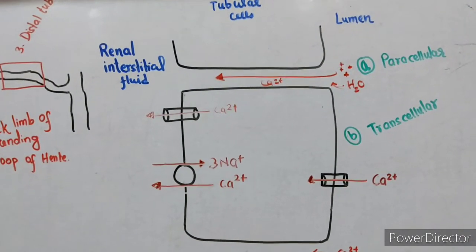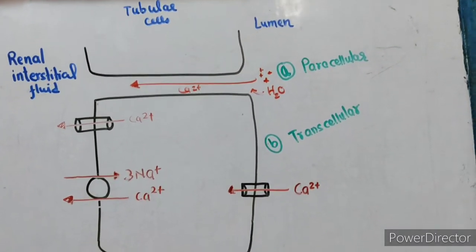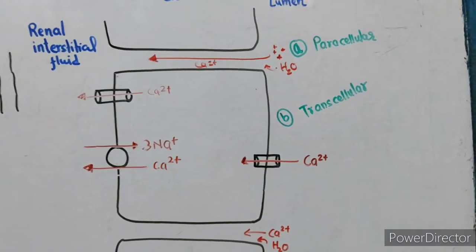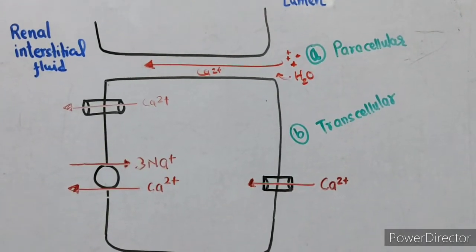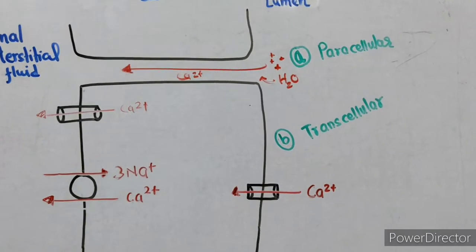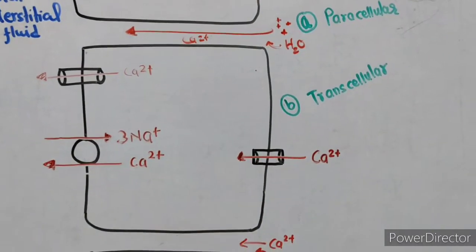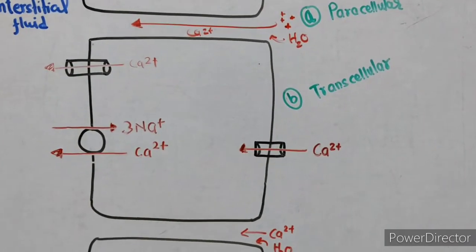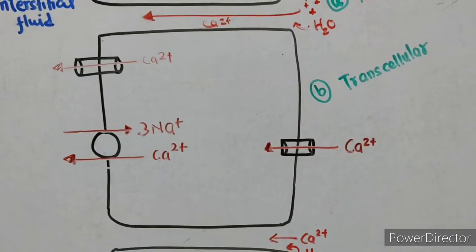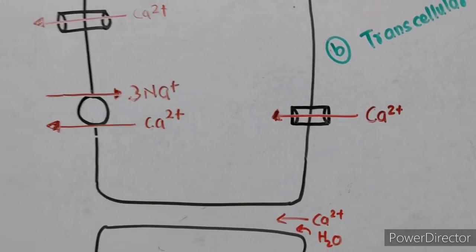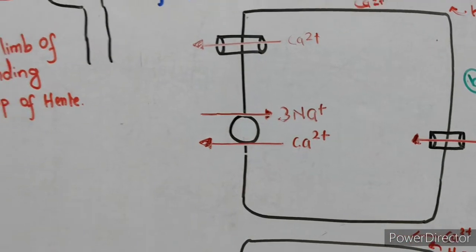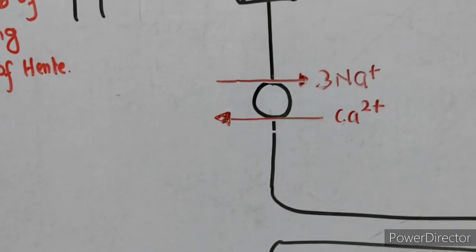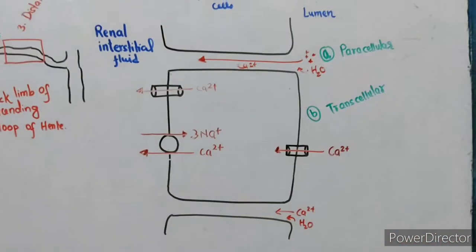The mechanism of calcium reabsorption is similar in all three regions. In the tubular cell diagram, the renal interstitial fluid and basolateral membrane are on the left side, and the tubular lumen and luminal membrane are on the right. Calcium is reabsorbed by two pathways: the paracellular pathway, a passive process driven by the slightly more positive charges in the lumen, meaning calcium moves between cells; and the transcellular pathway, an active process where calcium enters through luminal membrane calcium channels and is transported to the interstitial fluid via calcium ATPase pump and the calcium-sodium antiporter.